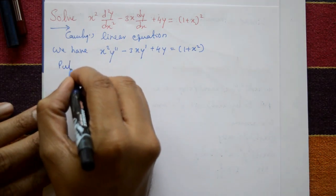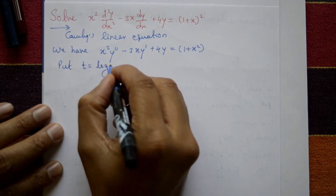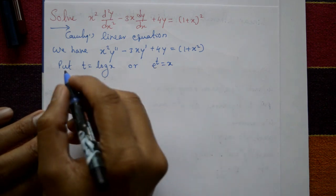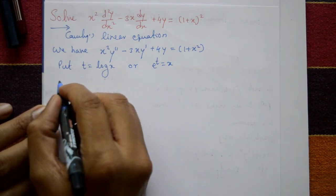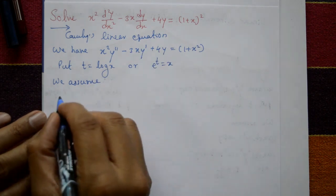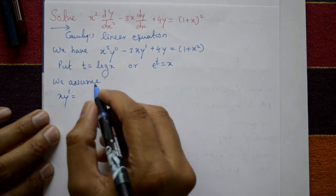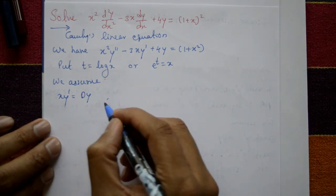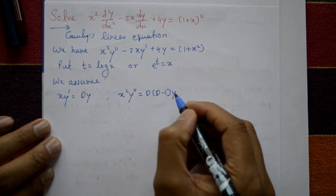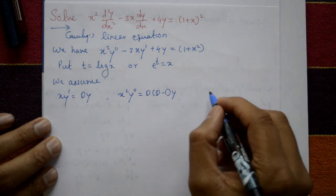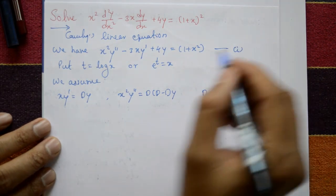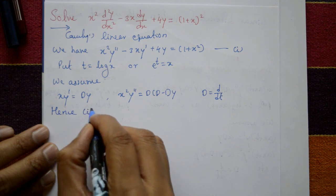Since this is a Cauchy's linear equation, put t equal to log x, or equivalently e raised to t equals x. We assume the standard results: x y' equals D·y, and x² y'' equals D(D−1)·y, where D stands for d/dt. This is equation number 1.